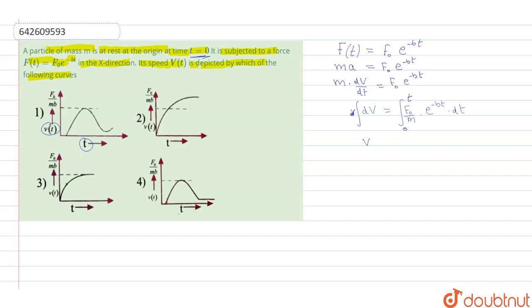We get the value of V as a function of time, which is equal to (F0 / M) multiplied by the integral of e^(−Bt) · dt, evaluated from 0 to t.